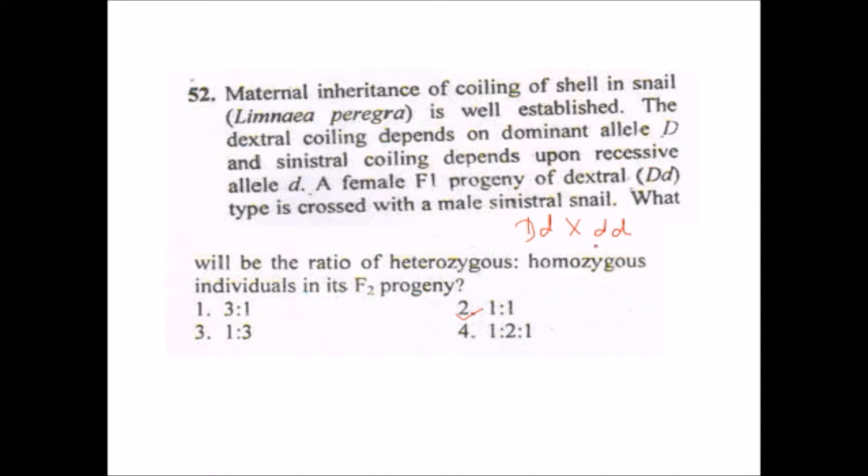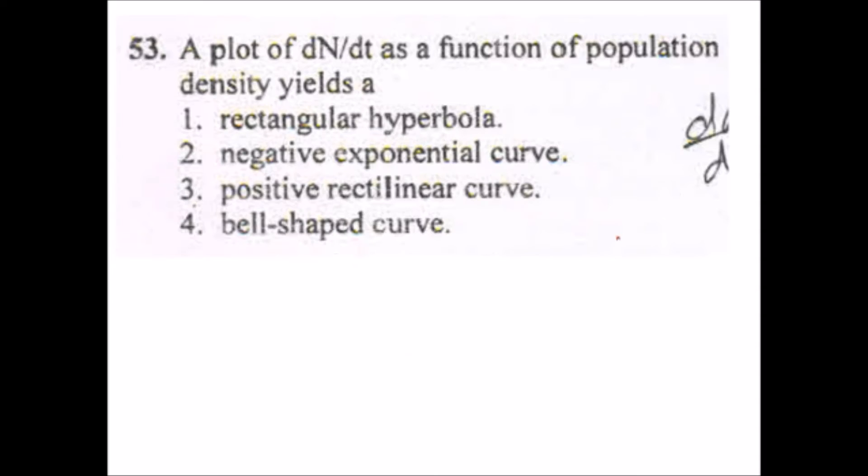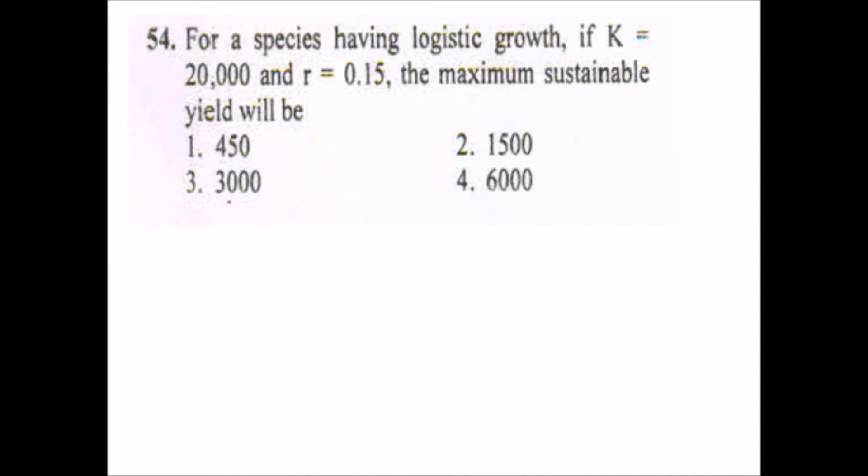This is a type of back cross or the test cross where you cross the F1 progeny with one of its recessive parents. So the answer will be one is to one. Next question: the plot of dN by dT as a function of population density is a bell-shaped curve.